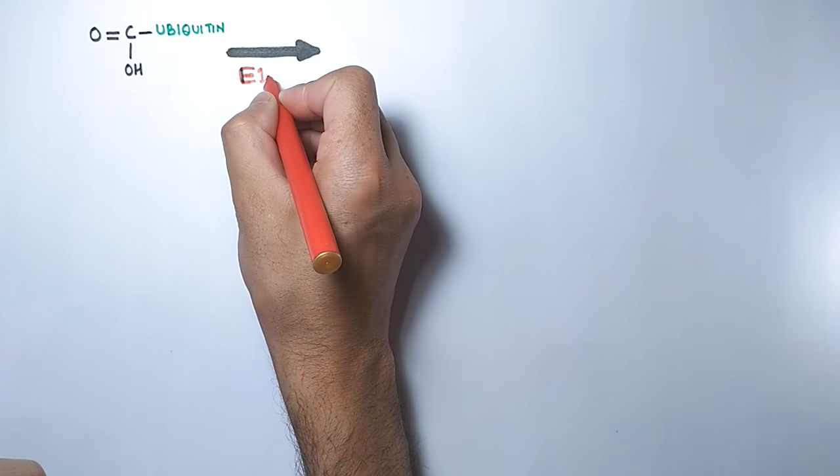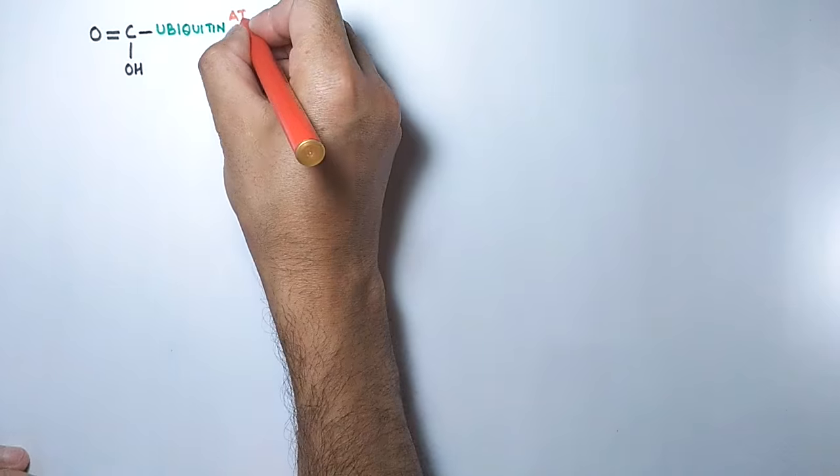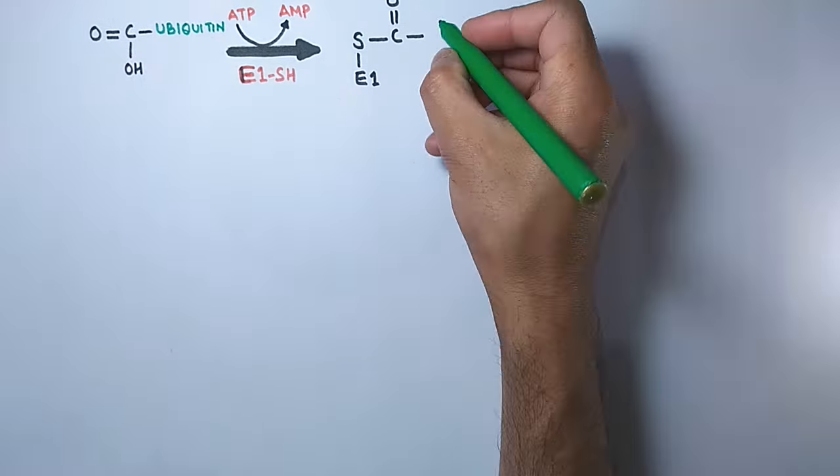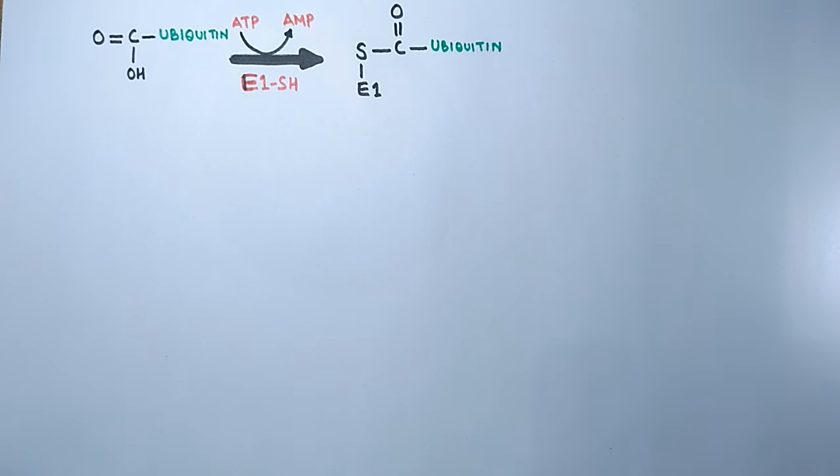Then the E1 enzyme acts on it in presence of ATP. In this reaction, the ubiquitin is linked to the E1 enzyme as shown in the structure by forming thioester bond with E1 enzyme.